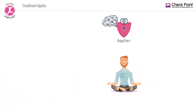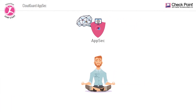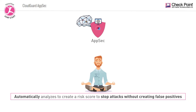From implementation through runtime, CloudGuard AppSec automatically analyzes every user, transaction, and URL to create a risk score to stop attacks without creating false positives.